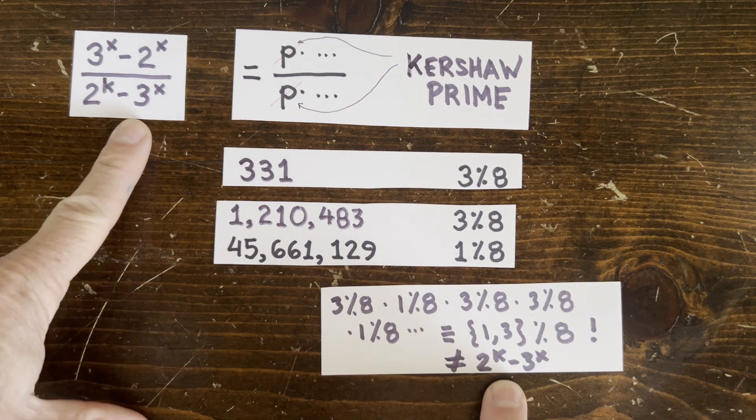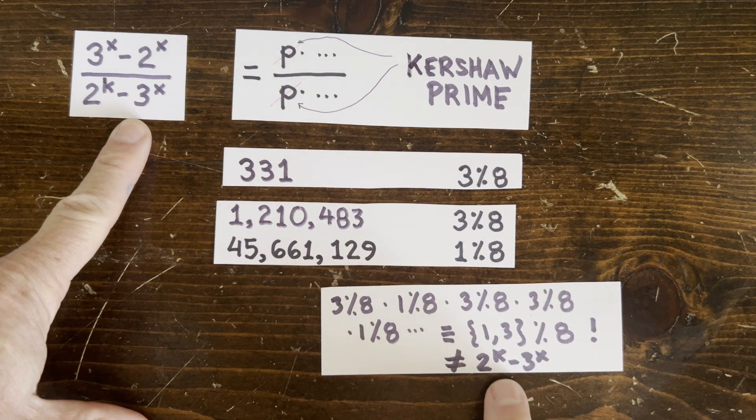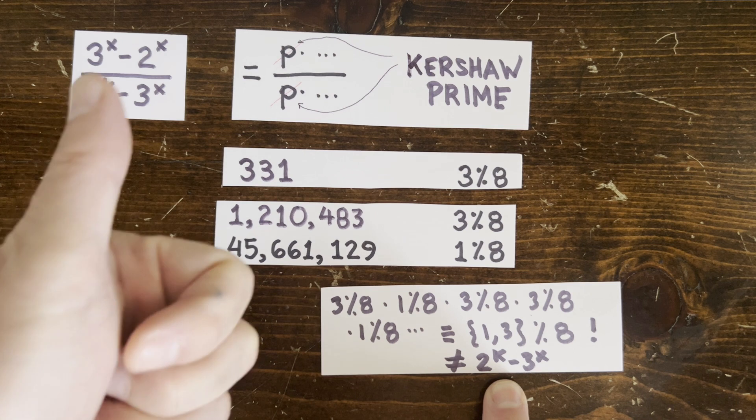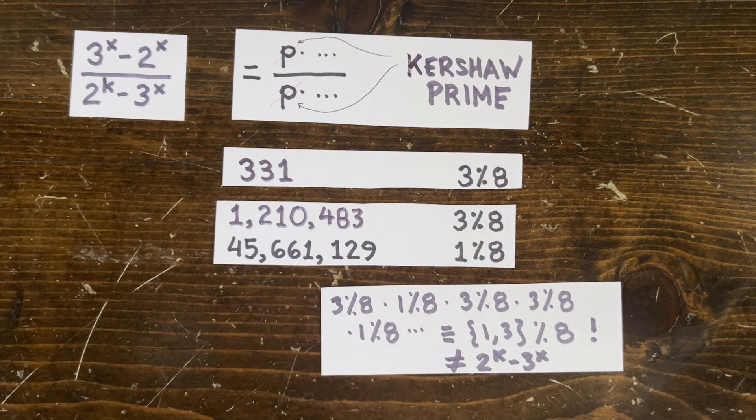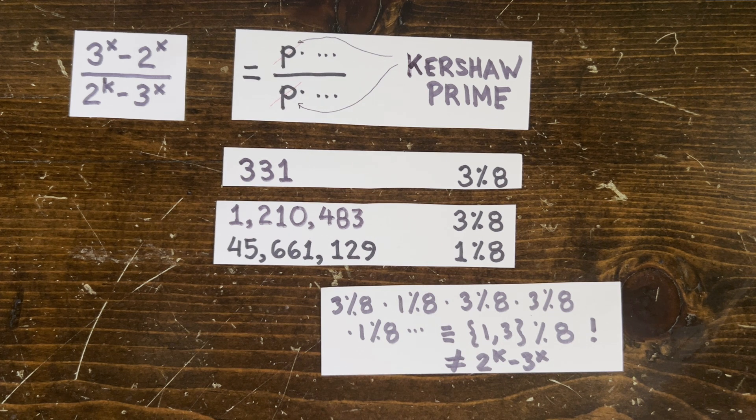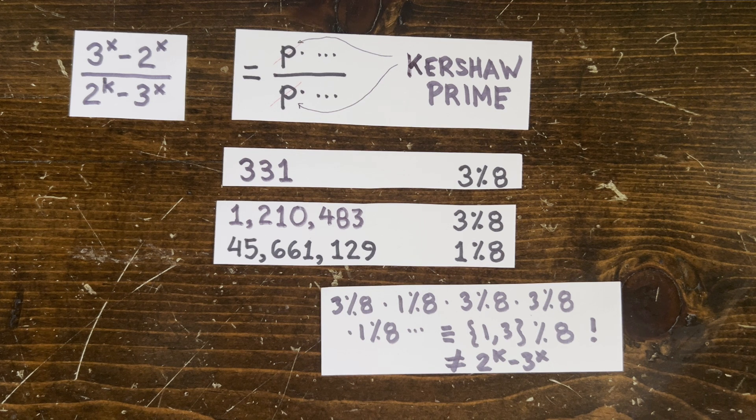And this denominator is never 1 or 3 mod 8. Even Gersonaitis knew that in the year 1343. So if every Kershaw prime were either 1 or 3 mod 8 then this denominator would always have to have some non-Kershaw factor that the numerator wouldn't share and so this could never be an integer.